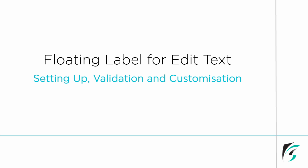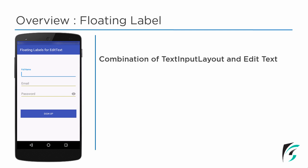Before proceeding, let's see what exactly floating label is. Floating label is the combination of text input layout and the edit text. Before the introduction of floating labels, when we used edit text for input, we were just provided with a hint. There was no presence of any kind of label — the hint was used as the label.